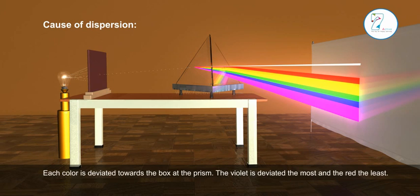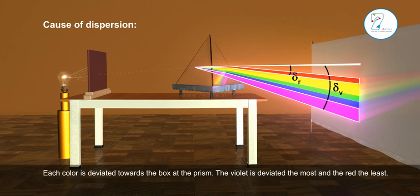Each color is deviated towards the base of the prism. The violet is deviated the most and the red the least.